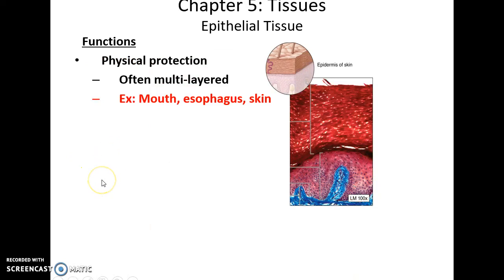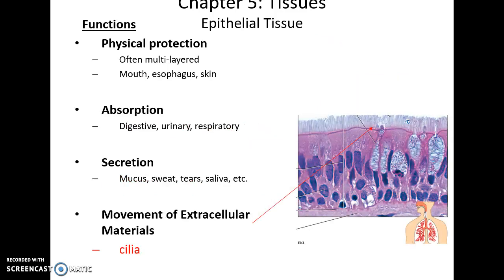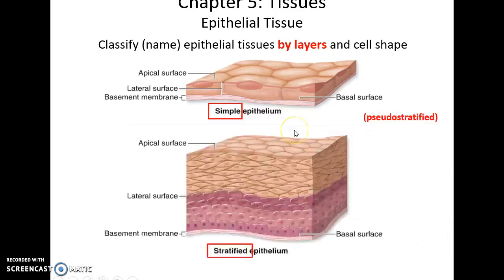Functions of epithelial tissue include protection — often multi-layered — it can experience friction and lose some of the superficial layers without actual damage occurring. There's absorption: it can absorb materials and bring them into the body. And secretion: it can secrete materials such as mucus, sweat, tears, etc. Also, movement of extracellular materials — the apical surface could have cilia, which can beat and move materials outside of the cell.